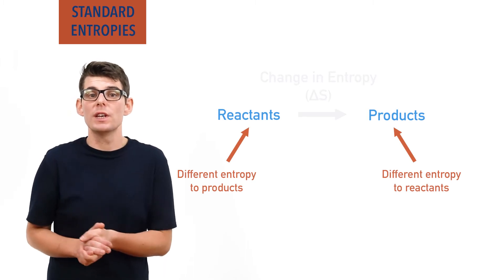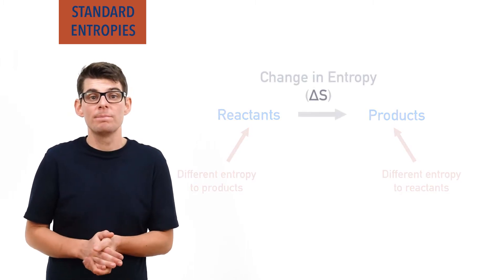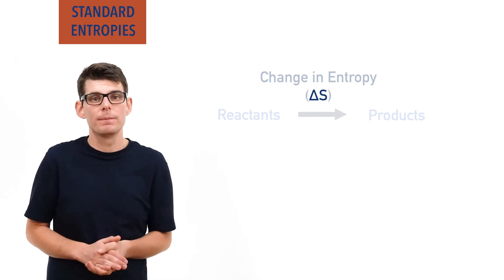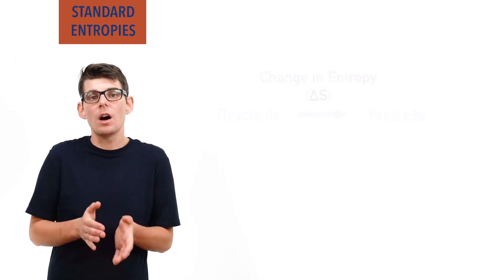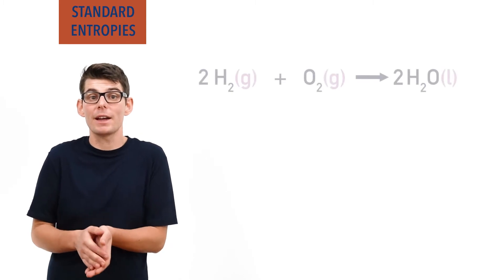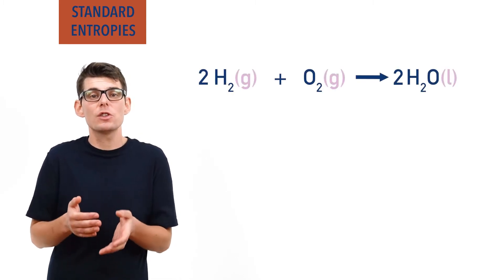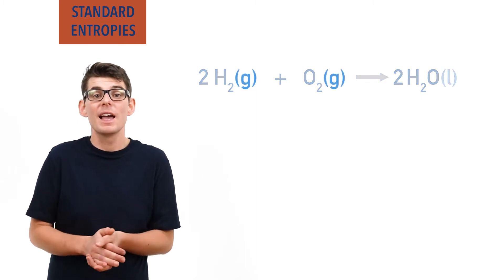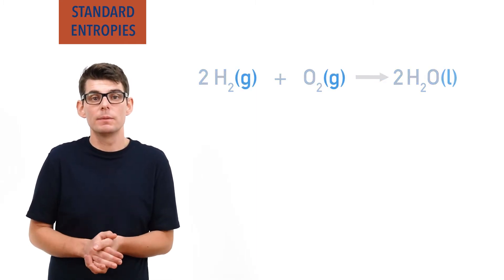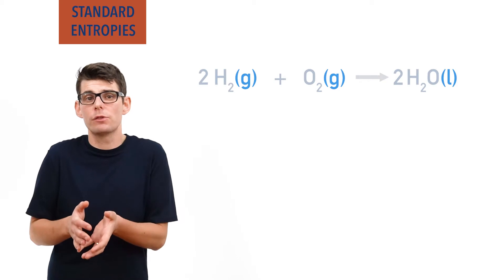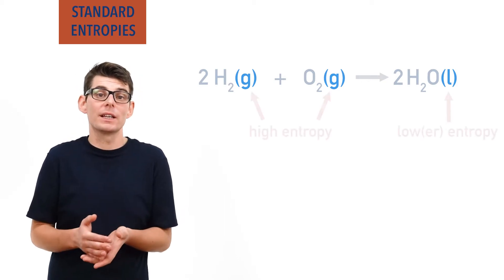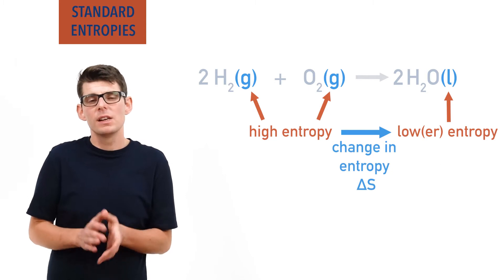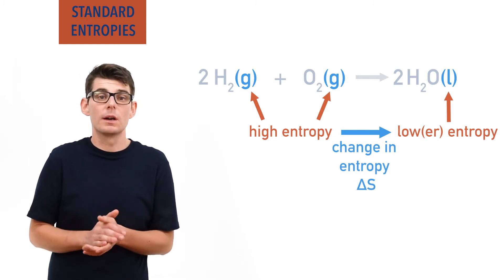We show a change in entropy as delta S — delta representing a change and S representing entropy. For example, when hydrogen gas and oxygen gas react to form water, there is a clear change in entropy. Hydrogen and oxygen are both gases and the water formed is a liquid. The entropies of hydrogen and oxygen will be higher than that of water, and a change in entropy will occur.